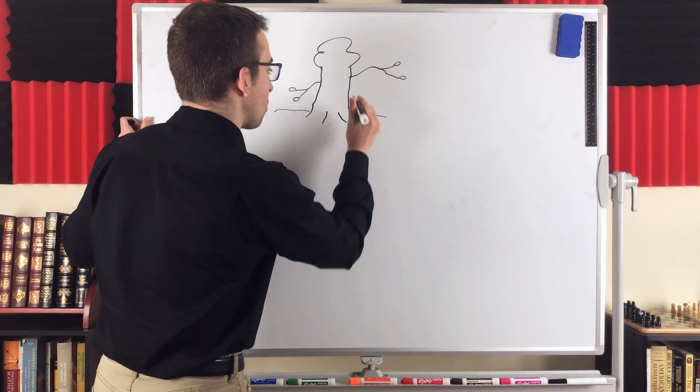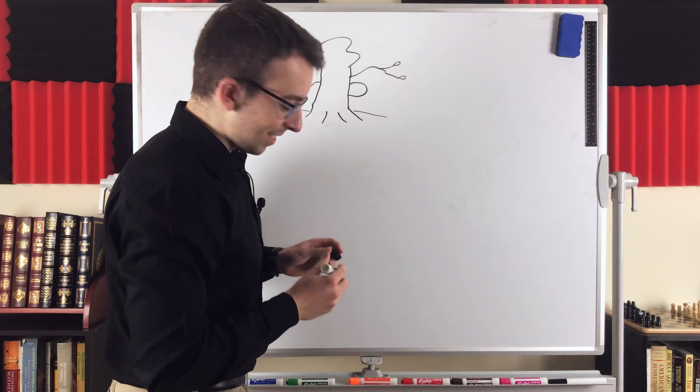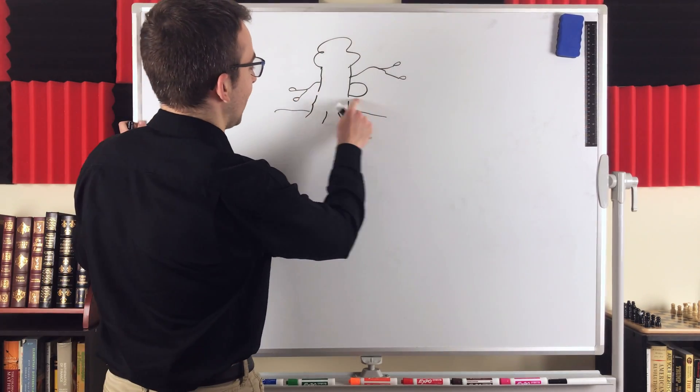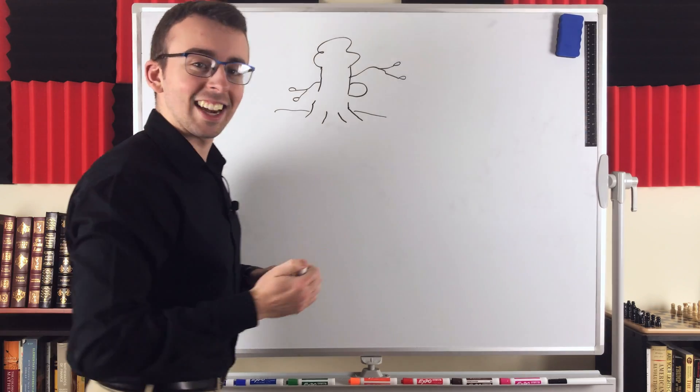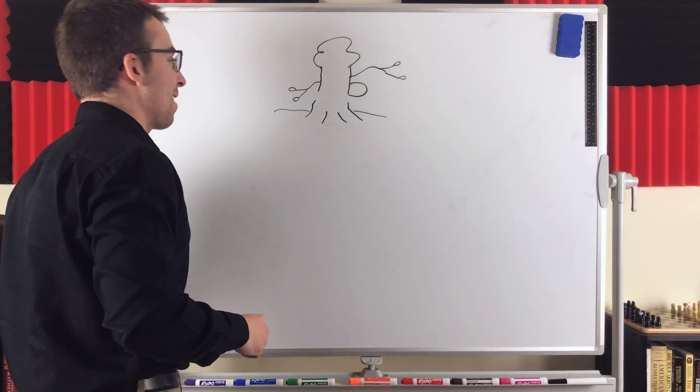Something you certainly wouldn't do is draw a branch like this that cycles back into the tree. You also, you know, you wouldn't draw the tree like that. You wouldn't disconnect the tree. And that's pretty much it. That's what a graph theory tree is.